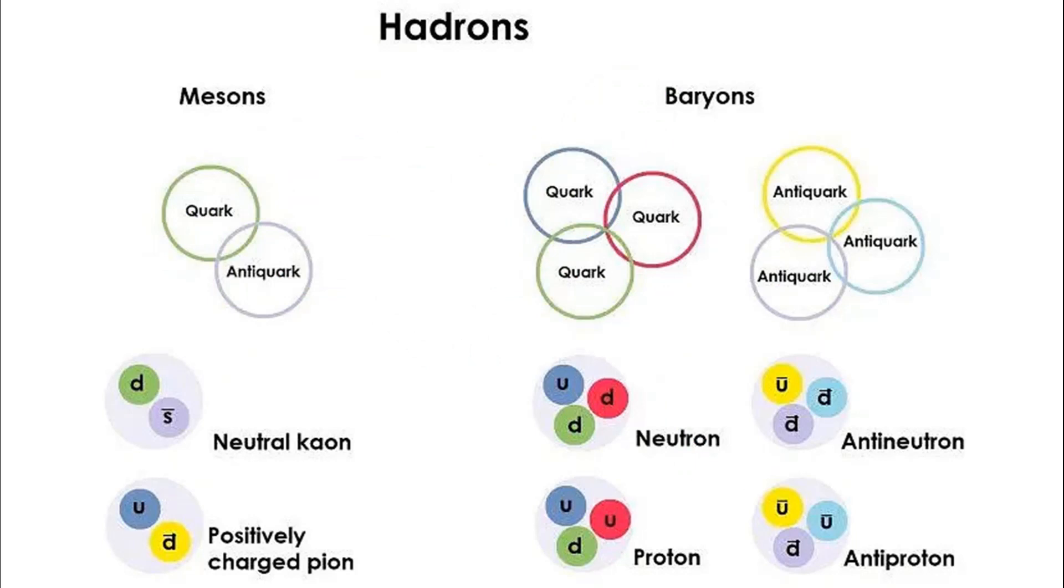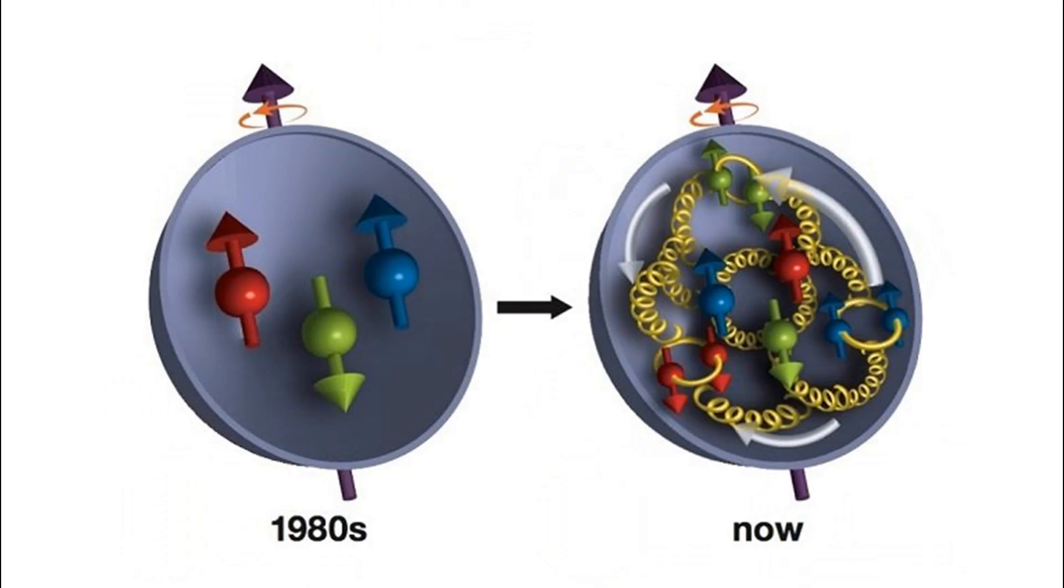However, this simple picture is not quite accurate. A more accurate picture is that baryons are made up of 3 valence quarks, plus a sea of quarks, antiquarks and gluons.